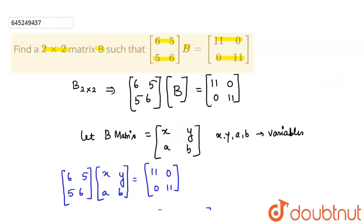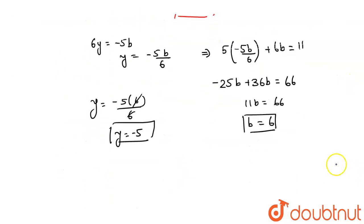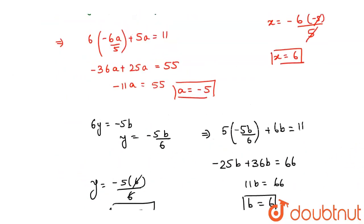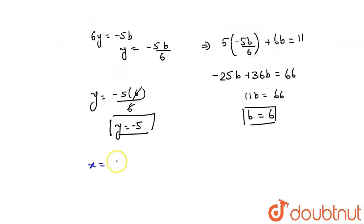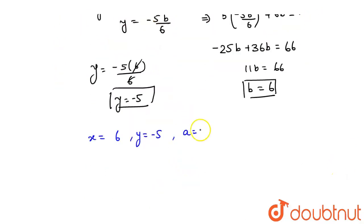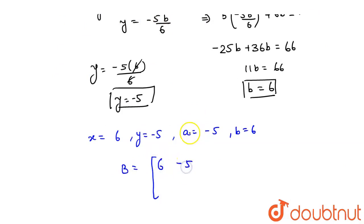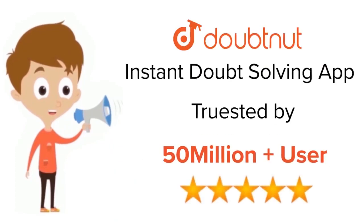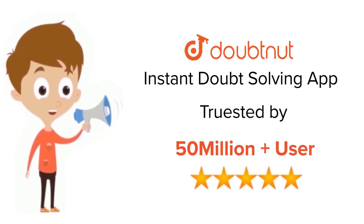So putting all the values together: x = 6, y = −5, a = −5, and b = 6. Therefore, matrix B is 6 −5 −5 6. That is the answer. DoubtNet is trusted by more than 5 crore students for class 6 to 12, IIT JEE, and NEET level. Download the DoubtNet app today.